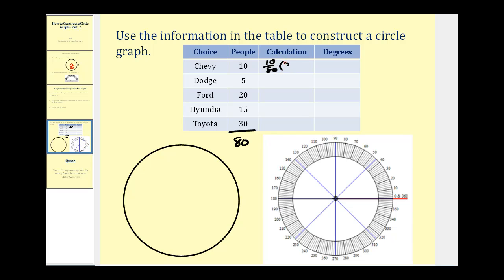So we're going to multiply this by 360 degrees. The next category is 5 eightieths. So we want 5 eightieths of 360 degrees. Next would be 20 eightieths of 360 degrees. 15 eightieths of 360 degrees. And the last category is 30 eightieths of 360 degrees.